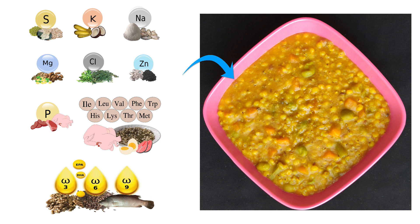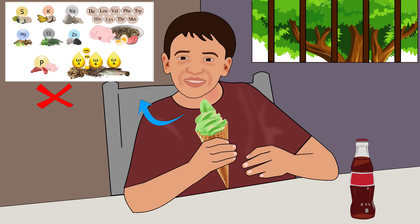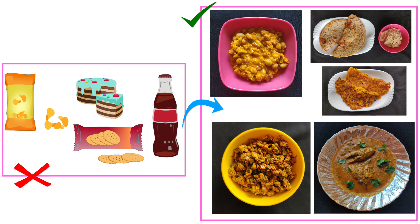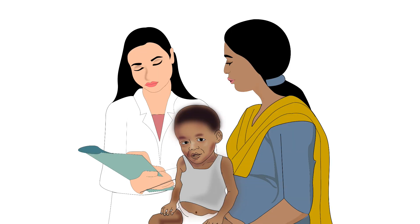Food rich in all type 2 nutrients must be given in such a deficiency. Increasing only the quantity of previously given food will not work, as that food failed to provide type 2 nutrients to the body. The quality of food must be changed for normal growth of the body. Please consult a qualified nutrition expert for further guidance.